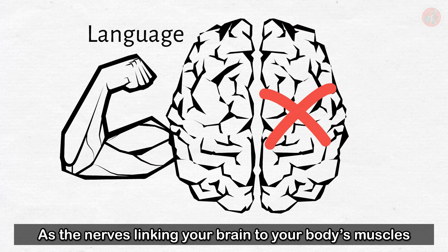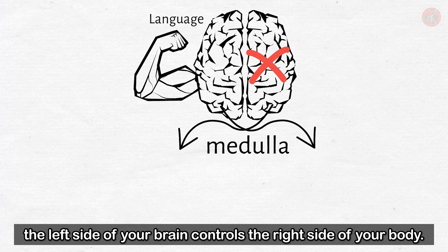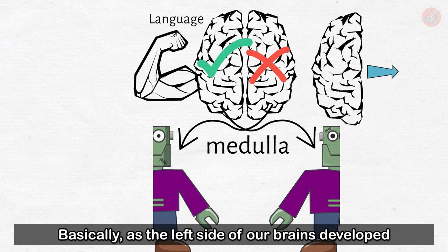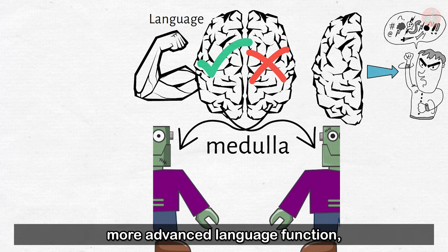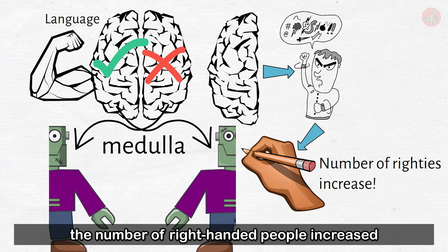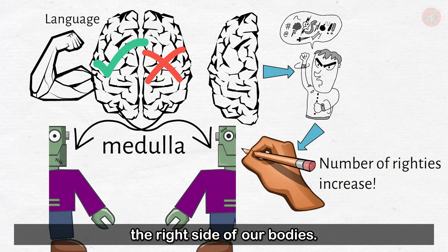As the nerves linking your brain to your body's muscles are crossed left and right at the medulla, the left side of your brain controls the right side of your body. Basically, as the left side of our brains developed more advanced language function, the number of right-handed people increased because the left side of our brains controlled the right side of our bodies.